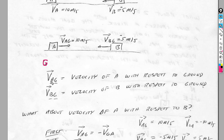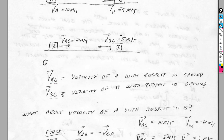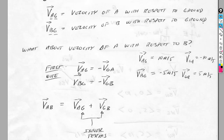This terminology is really, really important — the order of these letters matters. The velocity of A with respect to G is written with A before G. So the velocity of A with respect to the ground is written in this fashion. If I flip those letters, it means something different — the velocity of the ground with respect to A. This one is the velocity of B with respect to the ground, moving in the opposite direction. So the velocity of A with respect to G is not the same as the velocity of G with respect to A.